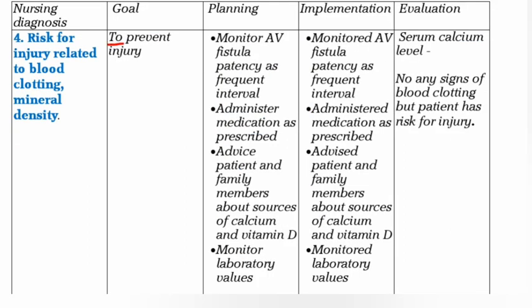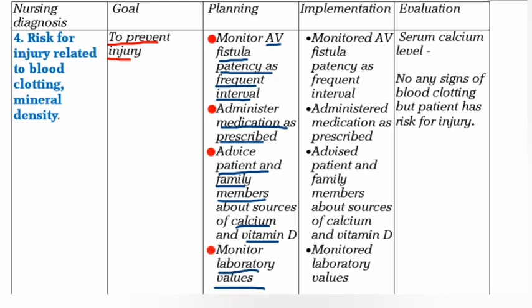Nursing Diagnosis 4: Risk for injury related to blood clotting and mineral density. Goal: To prevent injury. Planning: Monitor AV fistula patency at frequent intervals, administer medication as prescribed, advise patient and family members about sources of calcium and vitamin D. Implementation: monitored AV fistula patency at frequent intervals, administered medication as prescribed, advised patient and family members about sources of calcium and vitamin D. Evaluation: serum calcium level, no signs of blood clotting.